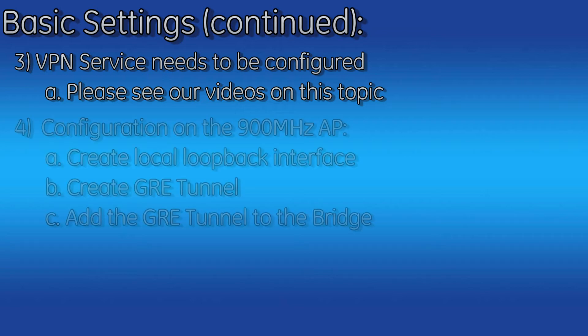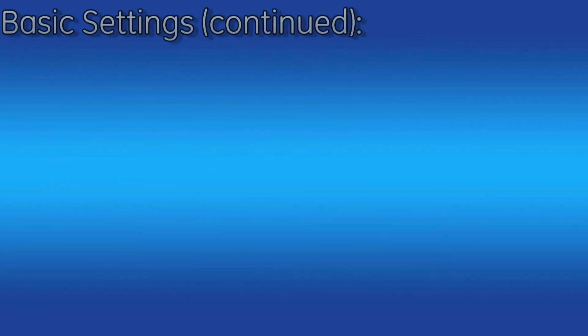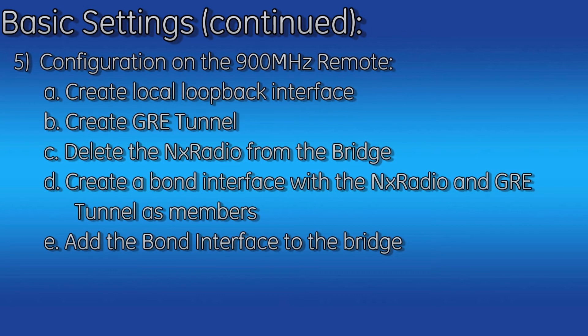To configure failover on the AP, we need to create a local loopback interface, create a GRE tunnel, and then add the GRE tunnel to the bridge. To configure failover on the remote, we need to create a local loopback interface, create a GRE tunnel, then delete the NX radio from the bridge, then create a bond interface with the NX radio and GRE tunnel as members, and then add the bond interface to the bridge.